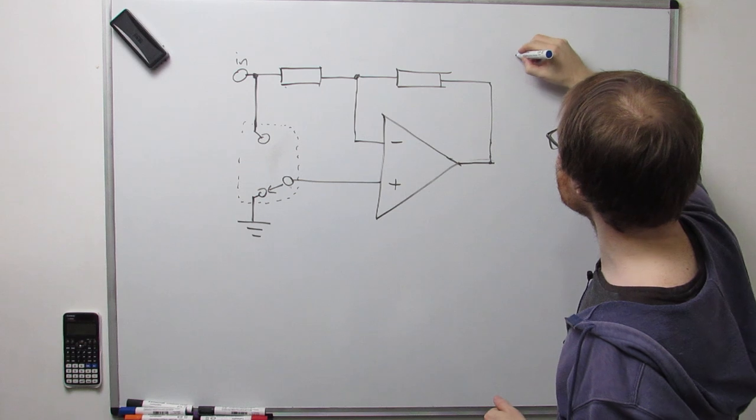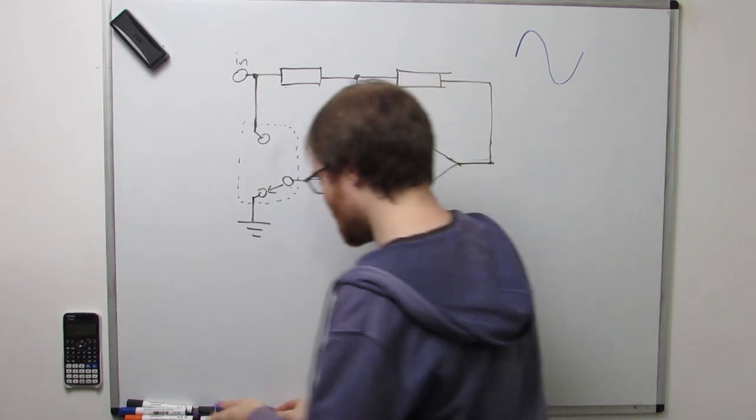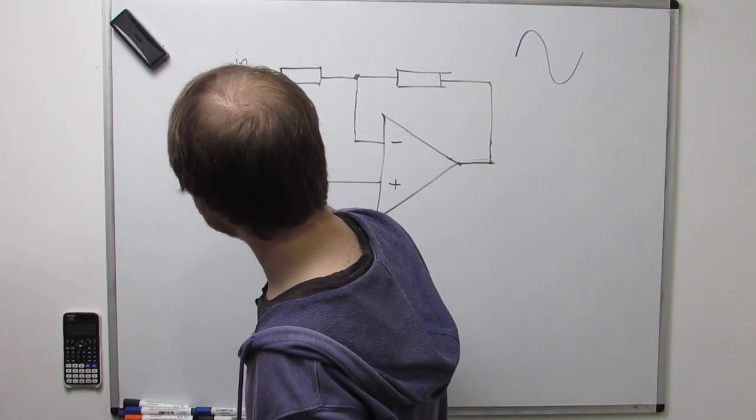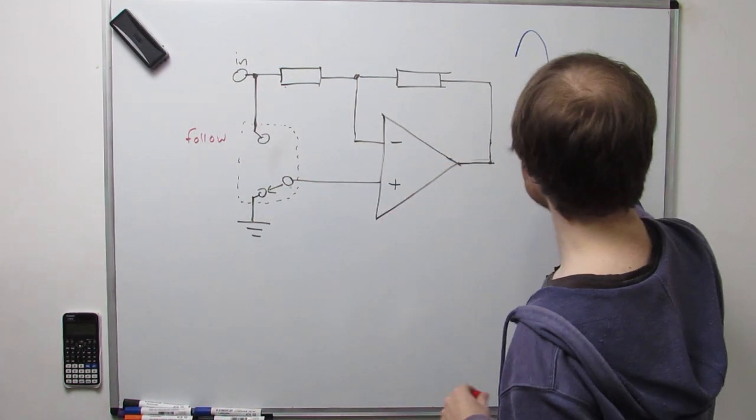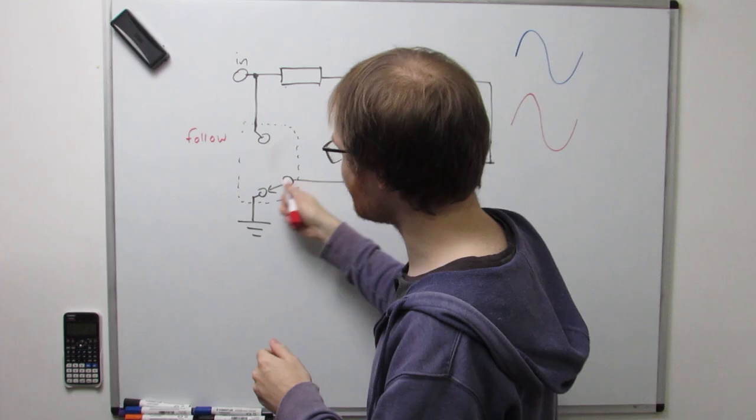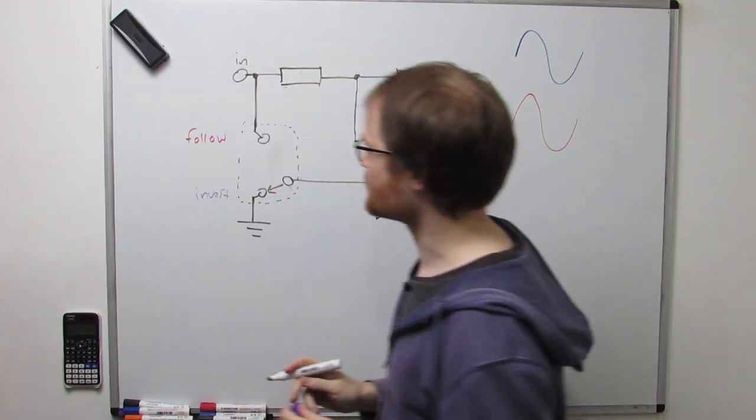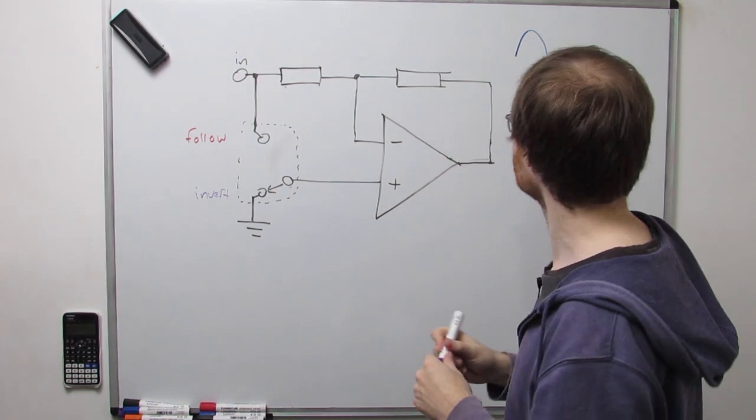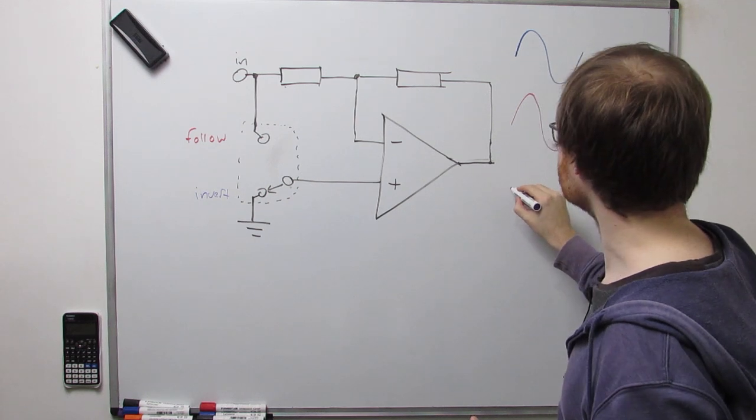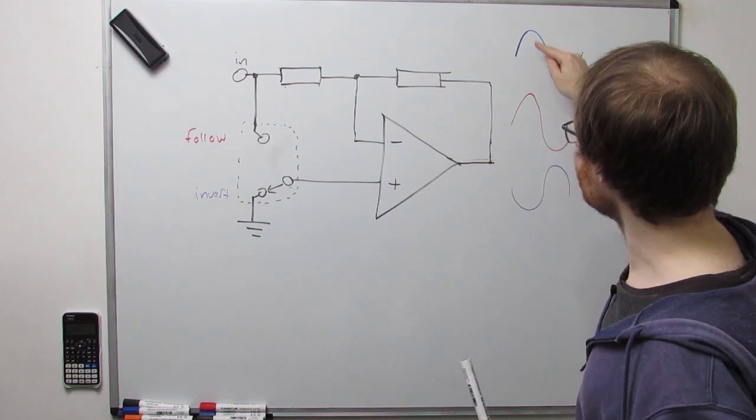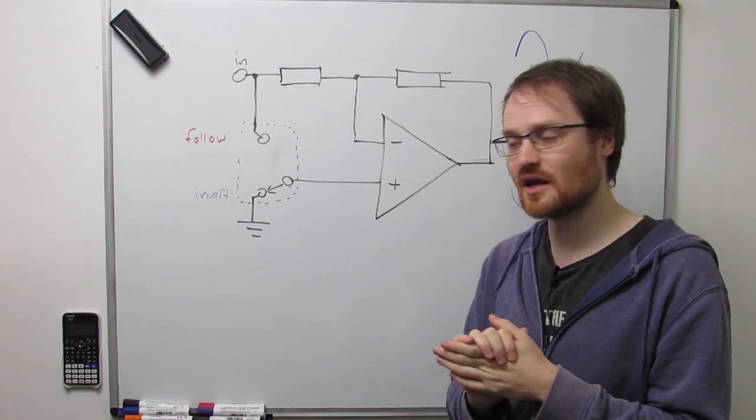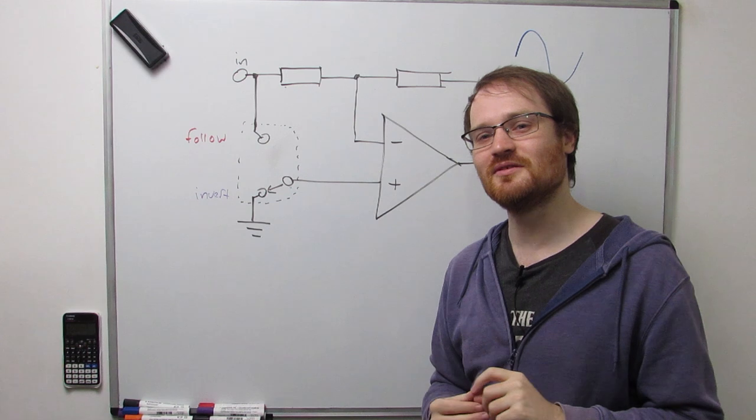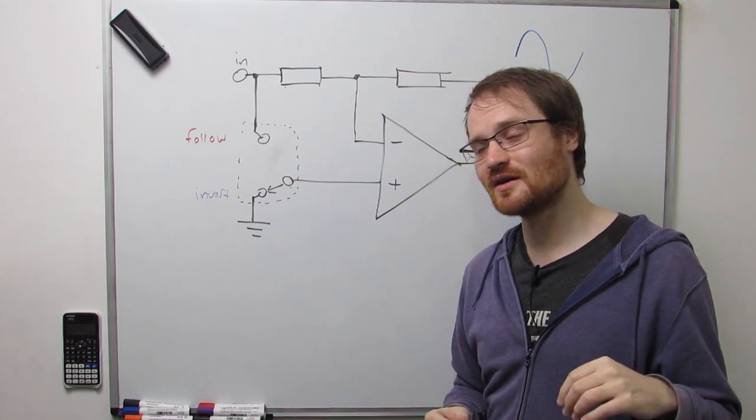If we had an input that looked like this, if we had the switch set in, we'll call this the follow position, and I'll explain why in a second, the output would look like this. Whereas if we have the switch in this position, then that's in the inverting position, and the output would look like this. You can see how the output, the peaks have become troughs, and the troughs have become peaks. And so we've got two settings here, and one of them is quite straightforward to understand, and the other one is a little bit subtle actually.